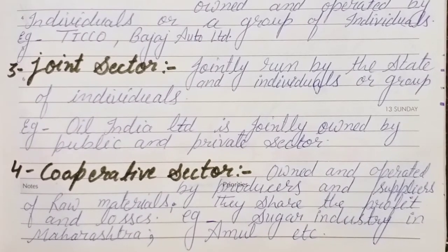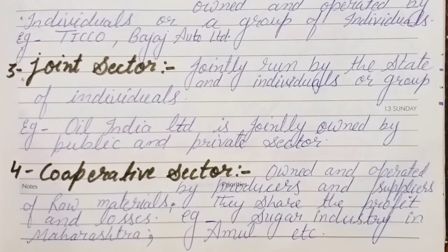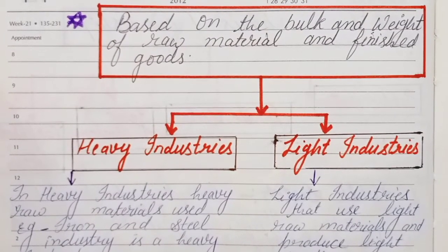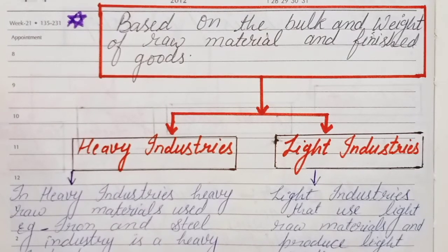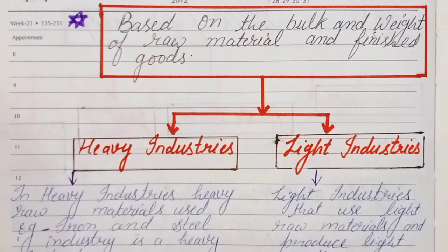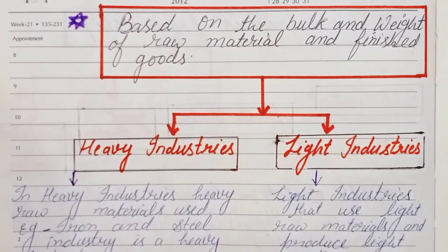So on the basis of ownership, we divide industries into four categories: public sector, private sector, joint sector, and cooperative sector. The last classification is based on the bulk and weight of raw materials and finished goods.